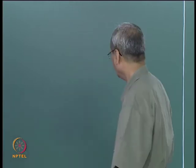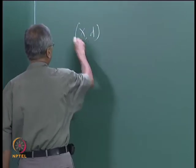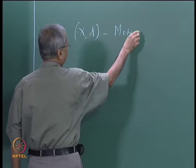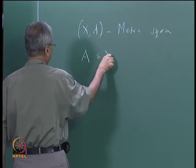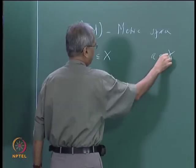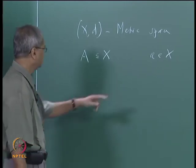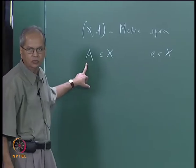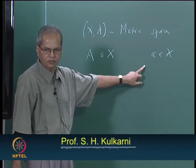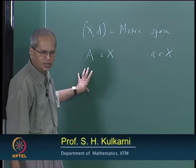In yesterday's class we discussed what is meant by open balls and the related concept of an interior point, which depends on the open ball. Suppose X is any metric space and we took subset A in X and a point a in X. We said that a is an interior point of A if there exists some open ball with center at a which is completely inside A.